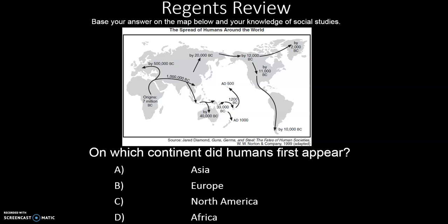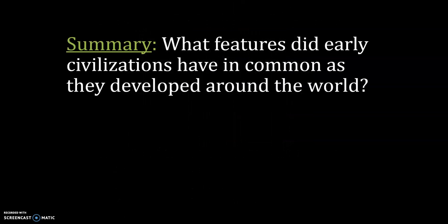Let's do a quick review question: on which continent did humans first appear, based on this map? This is a question about Paleolithic peoples. If you said D, you are correct — Africa is the right answer.